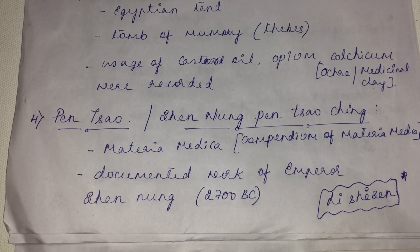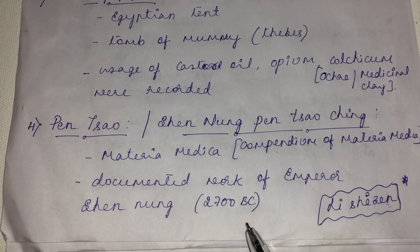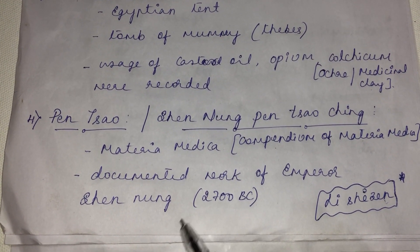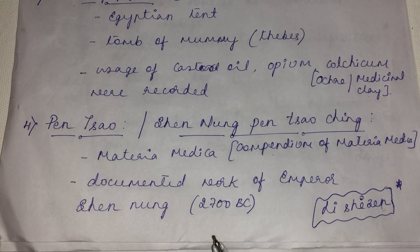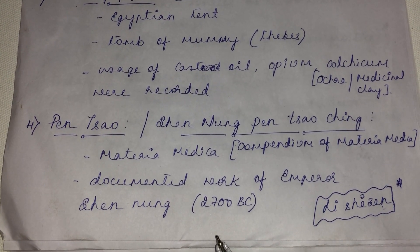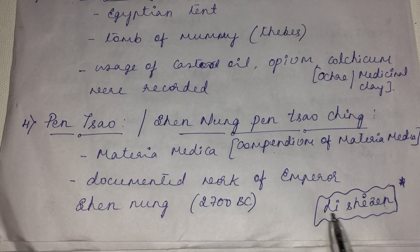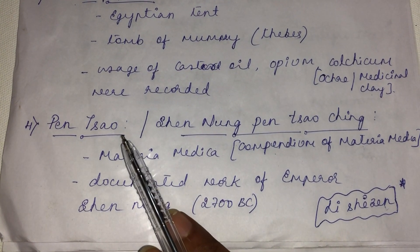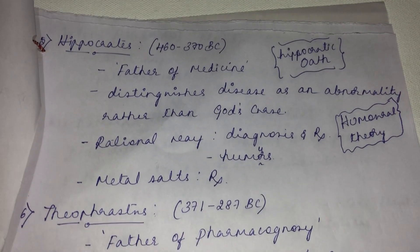The Pen Tsao was written by the famous person Li Shi Zhen, who documented the work of Emperor Shen Nang, a traditional herbal healer during 2700 BC. Shen Nang was a king as well as a traditional herbal healer, and all his works were documented by Li Shi Zhen in the book Pen Tsao.